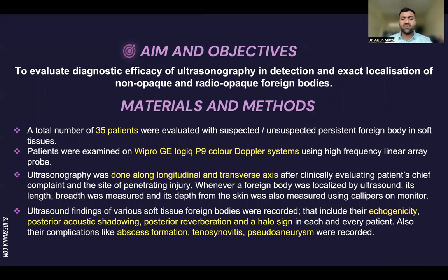Ultrasound findings of various soft tissue foreign bodies were recorded, including their echogenicity, posterior acoustic shadowing, posterior reverberation artifact, and halo sign in each and every patient. Also, their complications like abscess formation, tenosynovitis, and pseudoaneurysm were recorded.